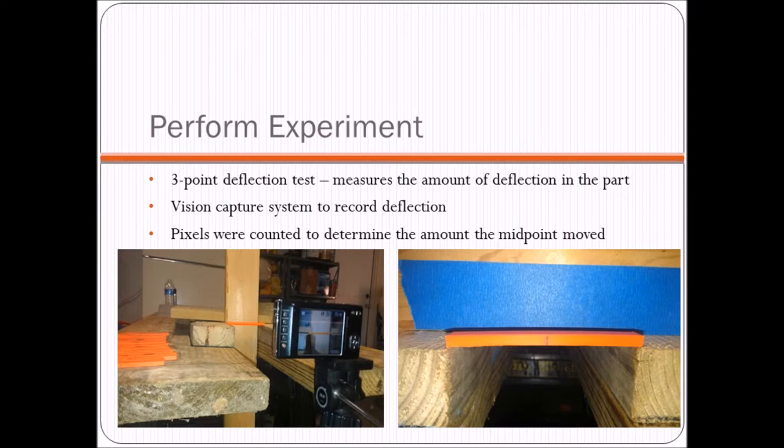We used a vision capture system to record and document that deflection. And then we actually counted the pixels between the baseline photograph that you can see on the right and one that would be deflected. And in order to minimize variability, we put the camera on a tripod and we also marked the center point of all of our 3D printed plastic parts so that the weight would be hung on the very center point each time. Also, we marked on the two boards the exact location that the part should be so that it will be placed in the same location every time. And we took other various measures to reduce our variability.